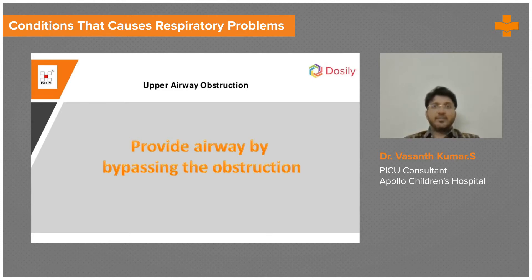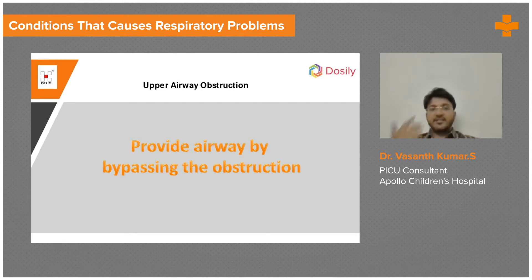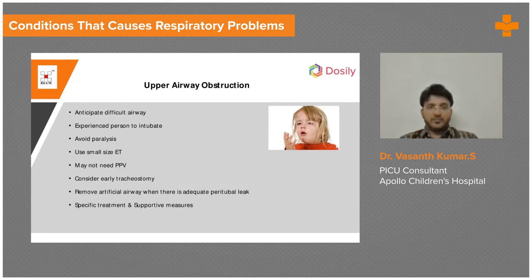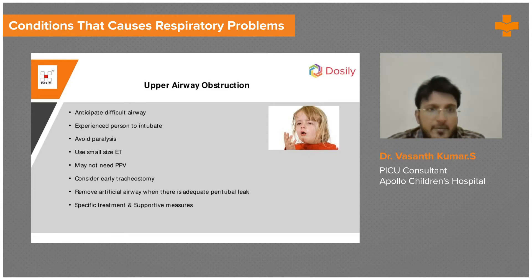There can be a possibility that you will not be able to intubate nor ventilate that patient, so this child or the adult can arrest in front of you. It is very, very important. In upper airway obstruction, it is always a difficult airway.